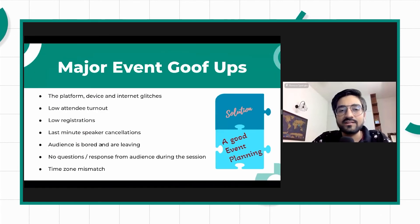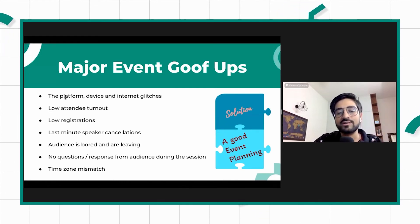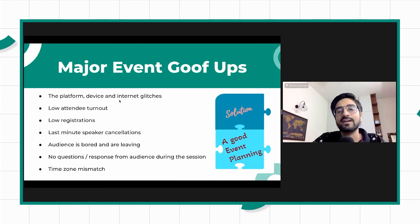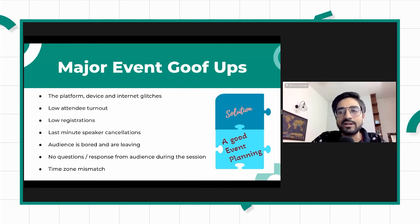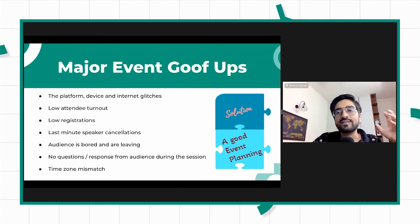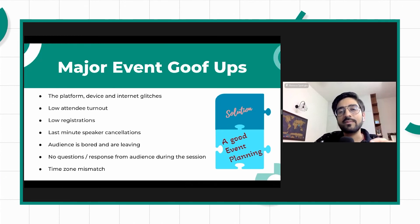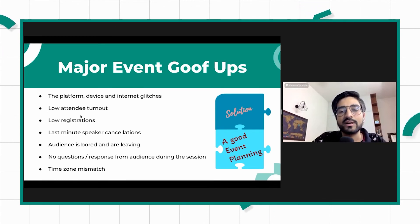Some common goof-ups that happen in events: make sure the platform is well-tested, the device you're using is well-tested, and the internet you have is well-tested. Low turnout is a common issue — a way to address it is to continuously run events and figure out what percentage of people who say yes actually turn up eventually. We've seen that 70% of people who accept our calendar invites actually turn up in our events, so we've been fairly precise in predicting how many people will attend.